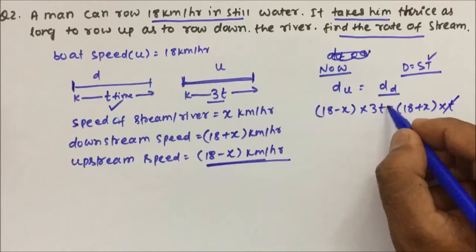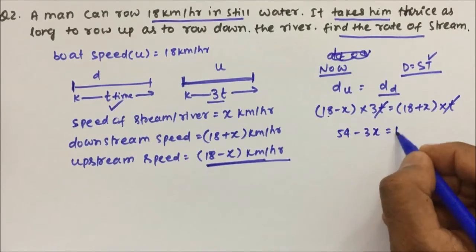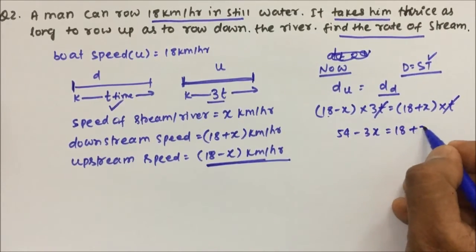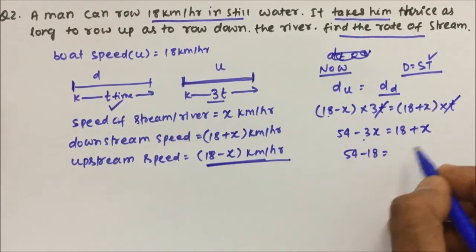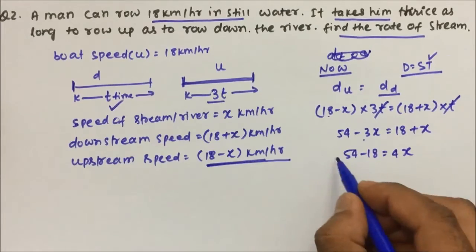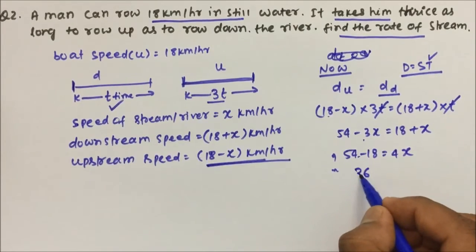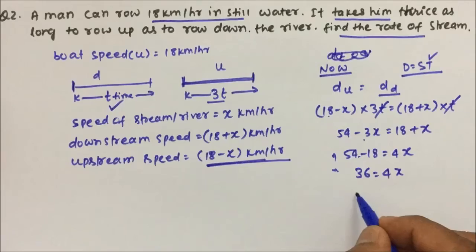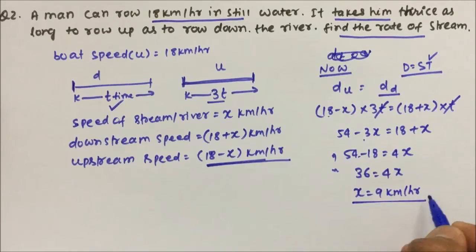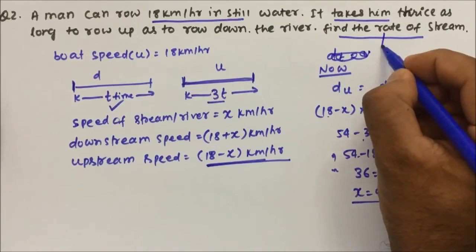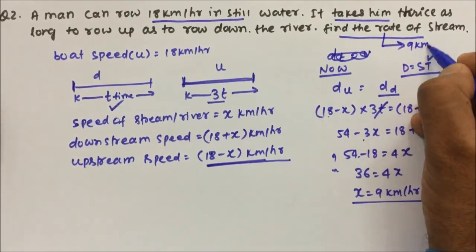So (18 − x) × 3t = (18 + x) × t. Cancelling t: 54 − 3x = 18 + x. Therefore 54 − 18 = 4x, so 4x = 36, giving x = 9 km/h. The speed of the stream is 9 km/h.